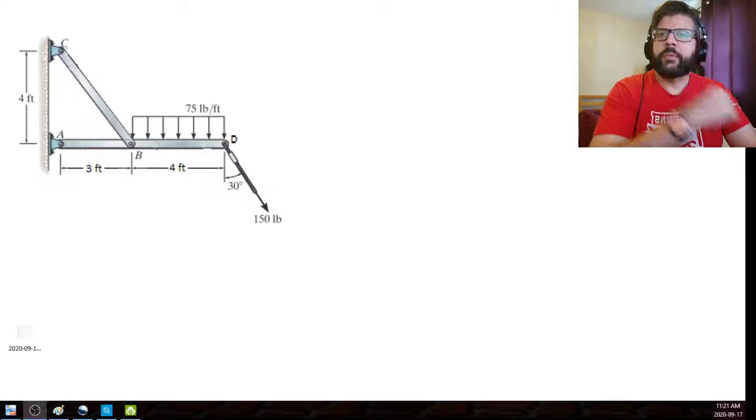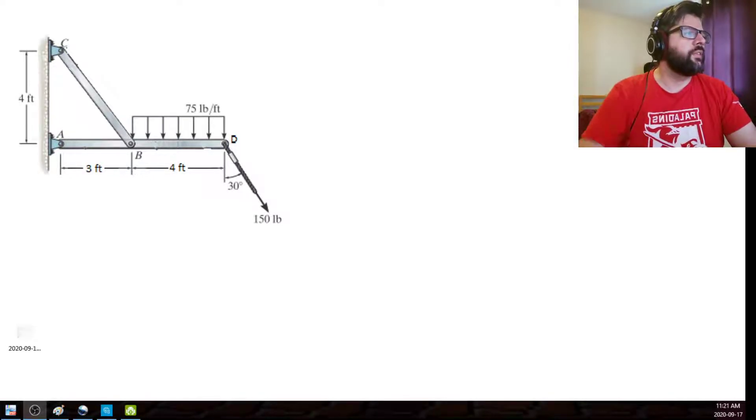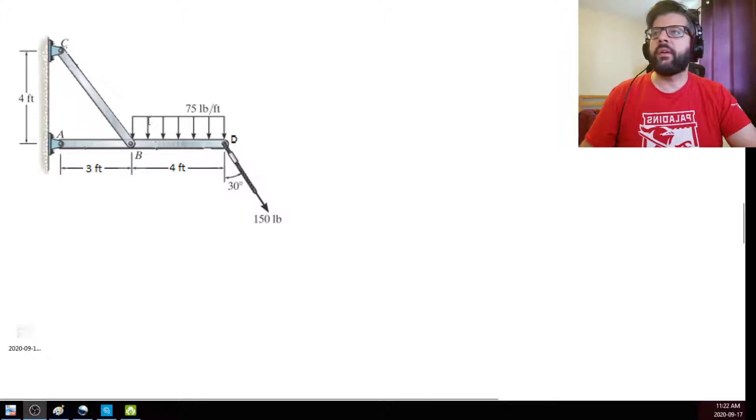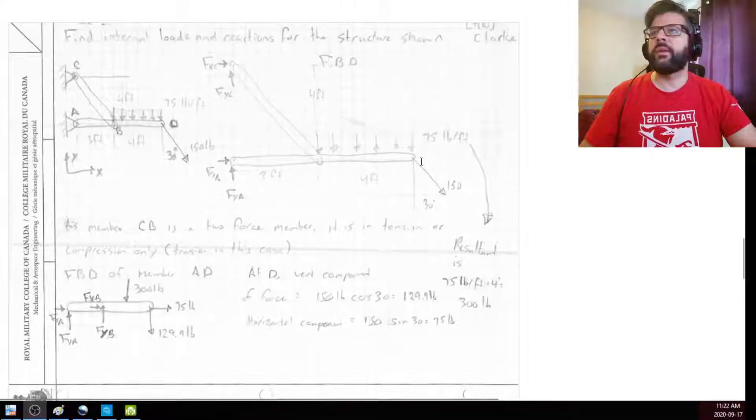Alright folks, so here's what I'm going to be doing next. We've got this span here pinned at this end. It's got a cable that's applying a force at an angle, a 30 degree angle here. It's got this distributed force of 70 pounds per foot between the end and where this other pinned connection connects to this bracket here at C. So let's go ahead and have a look at that.